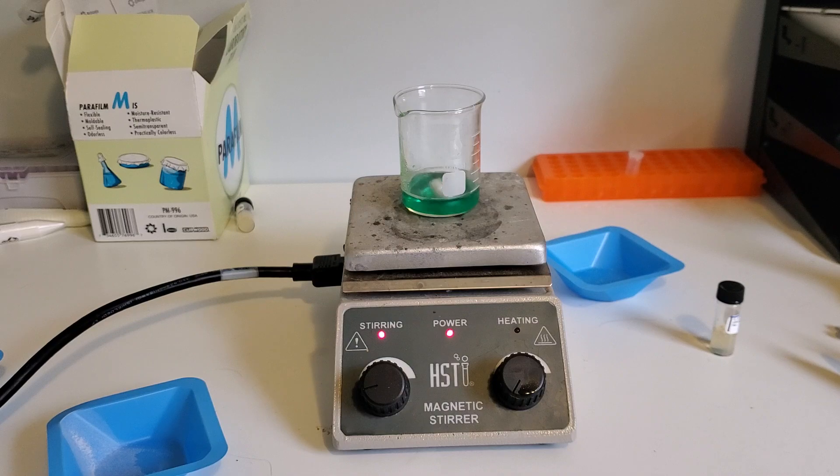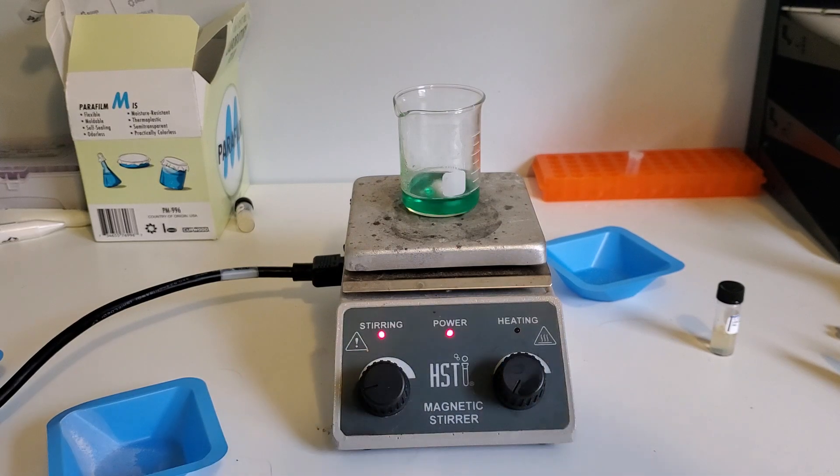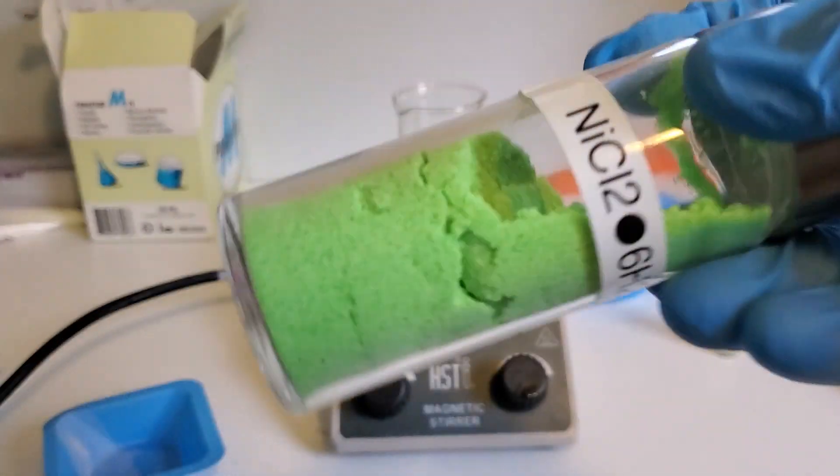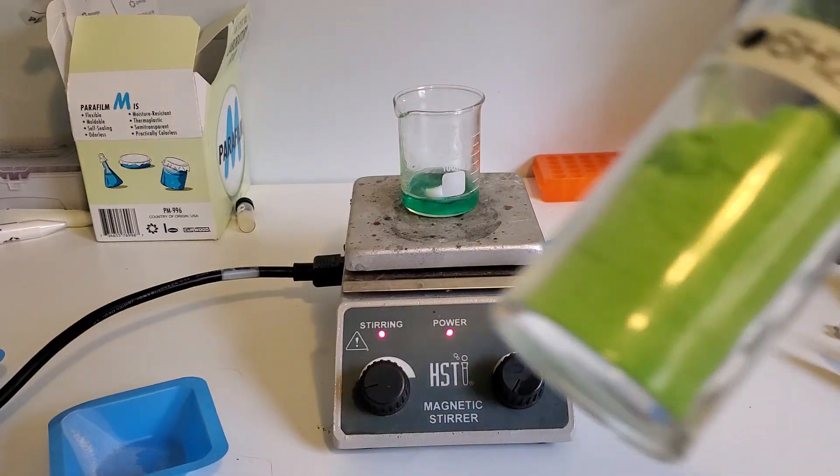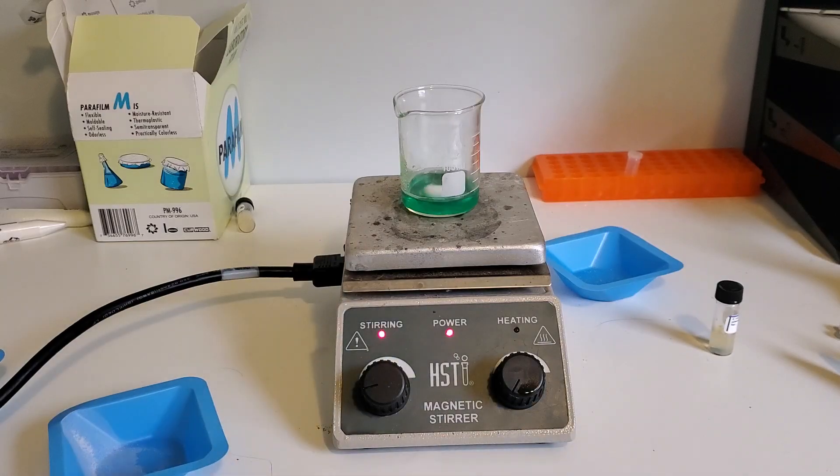Anyway, all you're going to need for this experiment is nickel-2 chloride, which I have 100 grams of. It's a pale green powder, although it forms a pretty green solution.